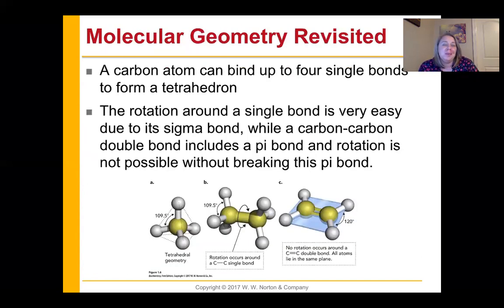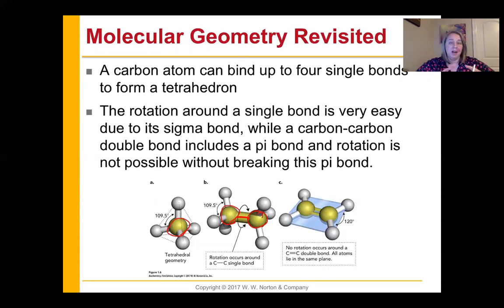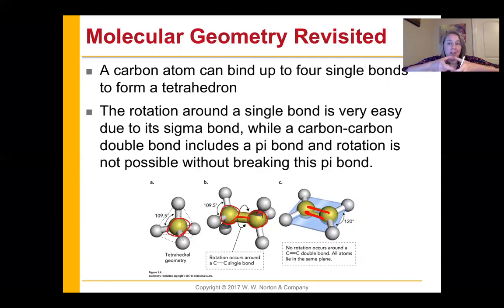The most common structure you're going to see with carbon making four single bonds is a tetrahedron. If you take two carbons and link them via a single bond, you can rotate around that carbon — it can move a lot. But when you convert that single bond into a double bond, you have a sigma and a pi bond. Because of those two bonds, you can't rotate — if you did, you'd break the pi bond. So anything with a carbon-carbon double bond lies in the same plane.